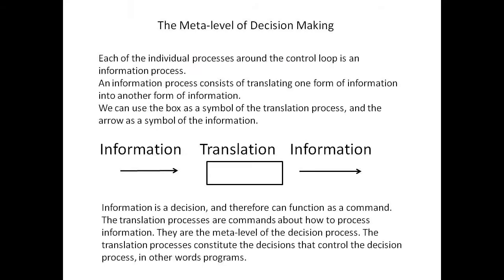Each of the individual processes around the control loop is an information process. An information process consists of translating one form of information into another form of information.